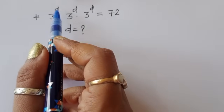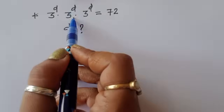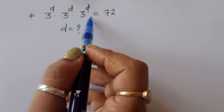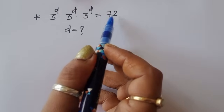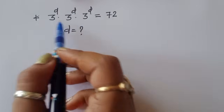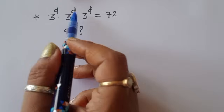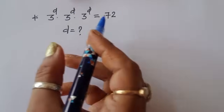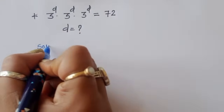The question is: given 3 power d times 3 power d times 3 power d is equal to 72, we have to find out the value of d. Let's see the solution.